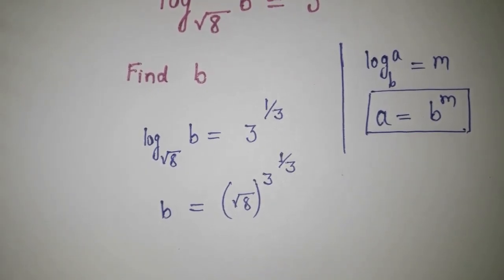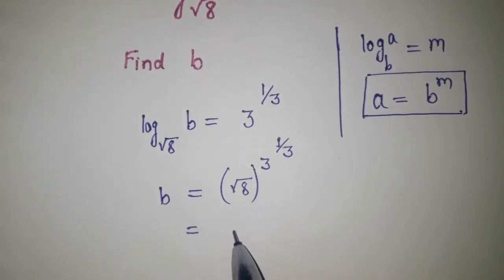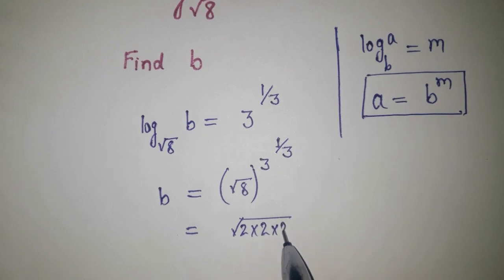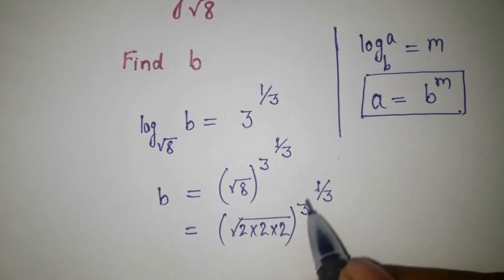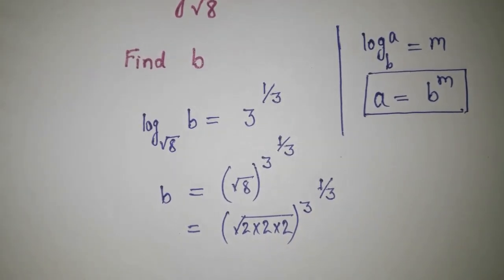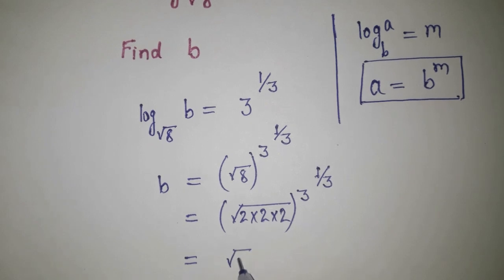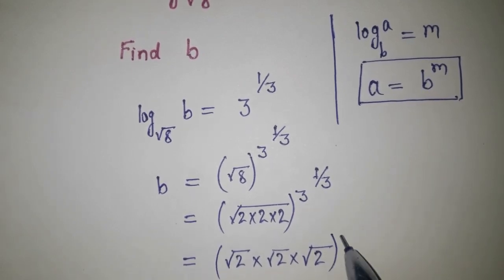Now we know that 8 equals 2 multiply 2 multiply 2. So here we can write instead 2 multiply 2 multiply 2 as the exponent. Then we are going to split this root: root 2 multiply root 2 multiply root 2, all raised to the exponent.